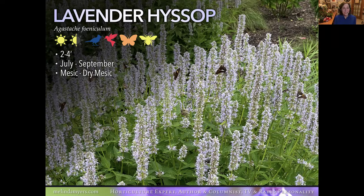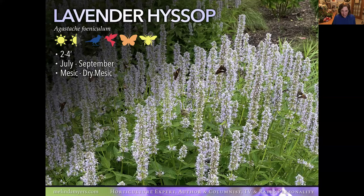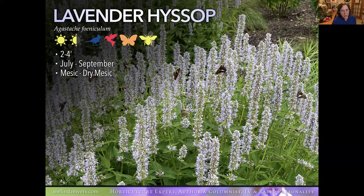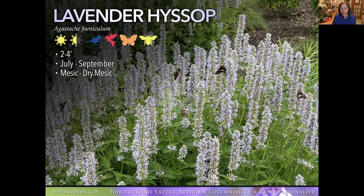Lavender Hyssop — Agastache — is one of my favorites. I took a picture standing in the middle of a large planting bed, and the butterflies and bees didn't bother to move. The skippers, silver-spotted skippers, swallowtails, bumblebees, honeybees, and native bees nectaring on these plants was just wonderful to see. Long season of bloom — a little late to start, but they catch up quickly once they sprout. The birds like the seeds, so I like to leave them up as nature's bird feeder. If you get more plants than you want, a little deadheading will help.